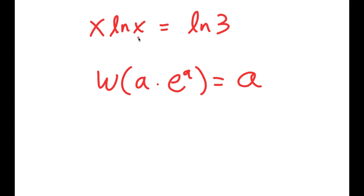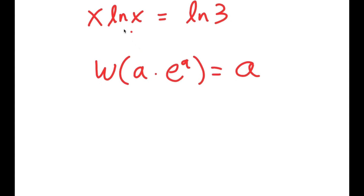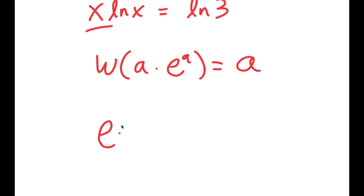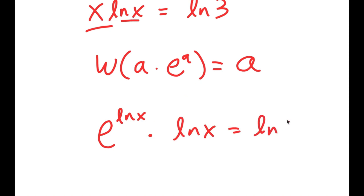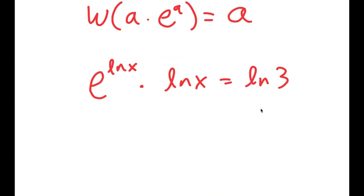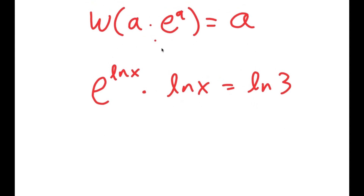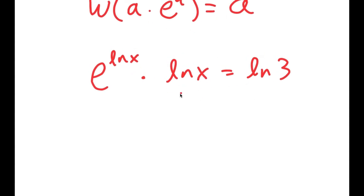I'm going to start by rewriting x as e to the power of ln of x, because e to the power of ln cancel out, so x is all that remains. So x is the same thing as e to the power of ln x, and I have this times ln x is equal to ln 3. Notice how this is now in the form a times e to the power of a, where a is ln x. So it's ln x times e to the power of ln x is equal to ln 3.